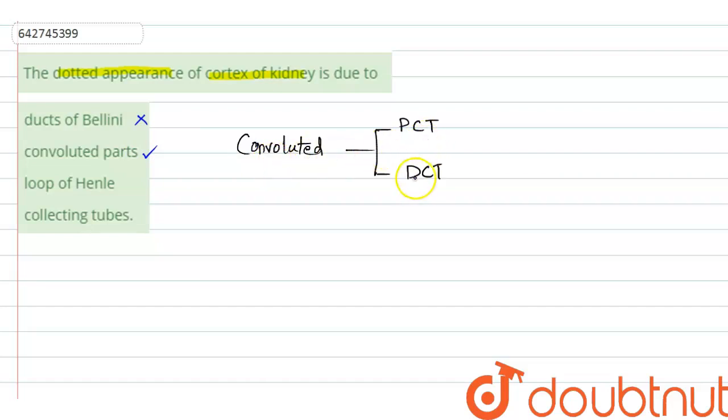The third option is loops of Henle, this is wrong. Last option is collecting tubes which is also wrong. Hence the answer here would be option number two. Thank you.